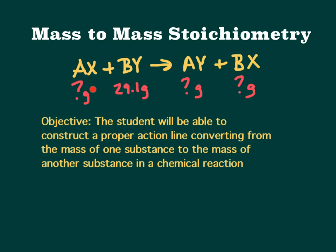So you might want to find how many grams of AX would be needed to react with that, or how many grams of AY it would produce, or BX it would produce. So we're going to try to make a proper action line converting from mass of one substance to the mass of another.